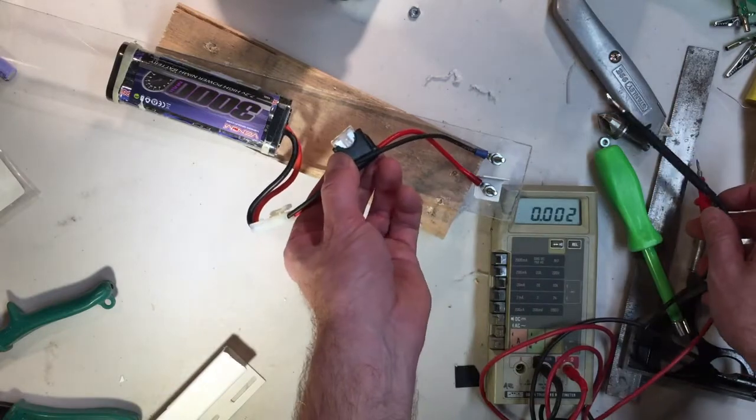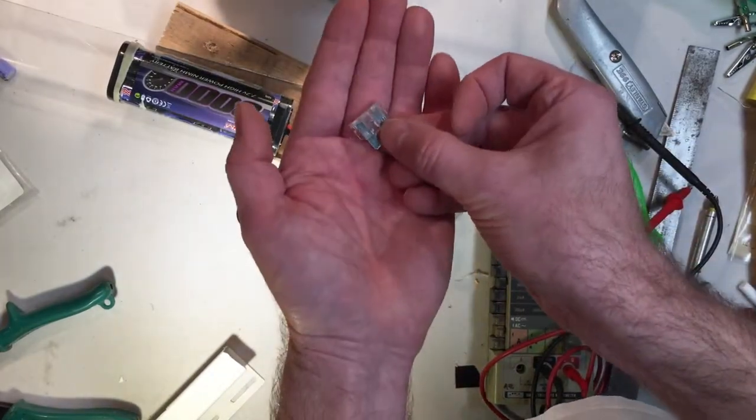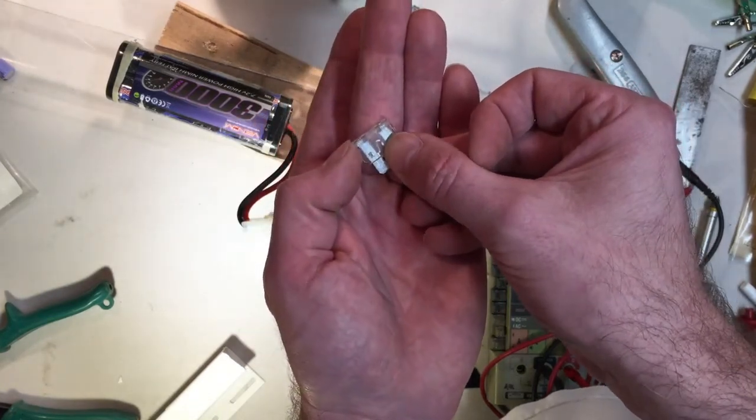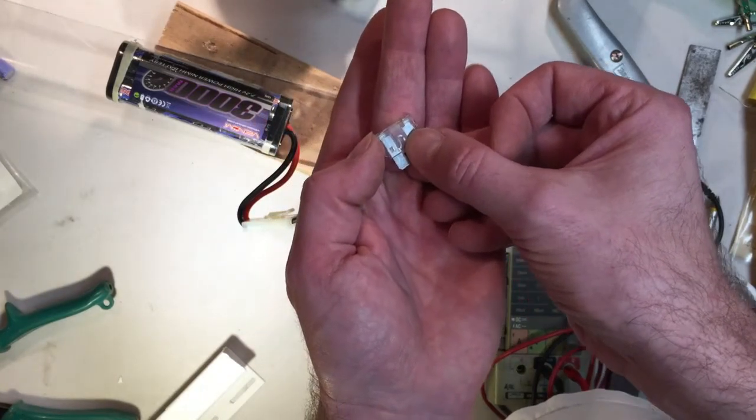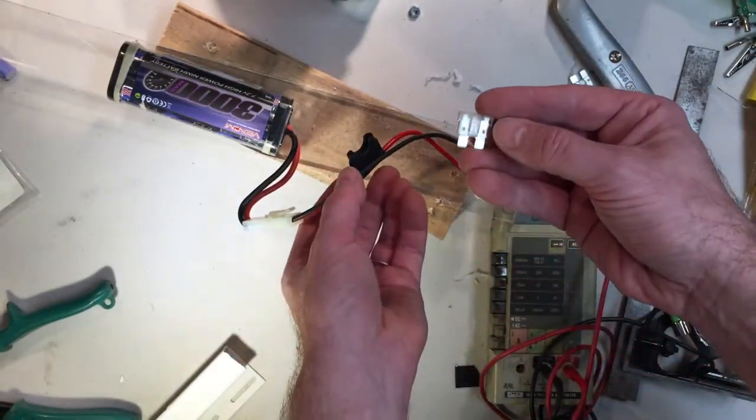So it turns out this fuse is actually burnt out. If you look really closely, which we might not be able to see here, you can see there's a little notch taken out of the piece of wire in the middle. So the fuse actually got fused. This one burnt out. Probably came out of some other project.